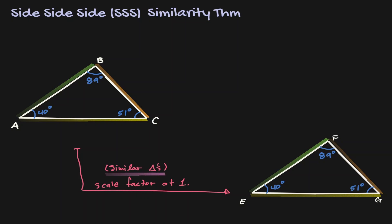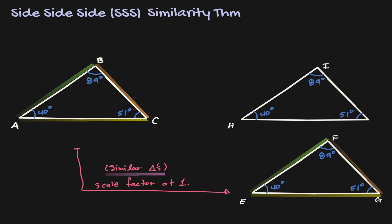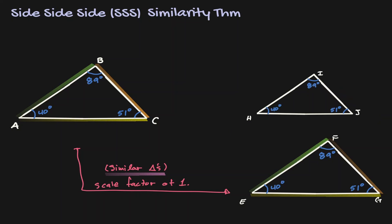Now let's copy triangle ABC one more time, but this time let's shrink this triangle by 75%. If you want to think about this in terms of scale factors, we took triangle ABC and multiplied by a scale factor of 3 over 4.